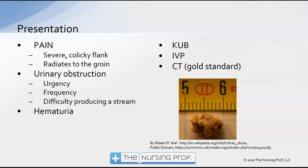Urinary tract obstruction can lead to urgency and frequency, and in fact can cause the patient to develop renal failure. So having an obstruction from a stone can be one of the causes of acute renal failure. Hematuria might also occur. As you can see from that stone in the picture, it is rough around the edges, and being rough, it can irritate the urinary tract and cause some bleeding.